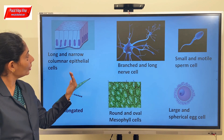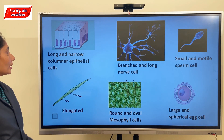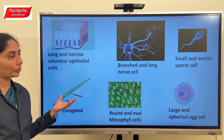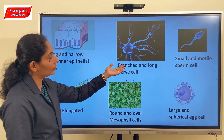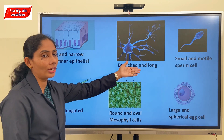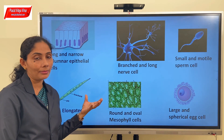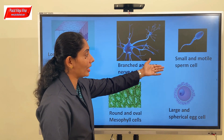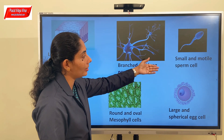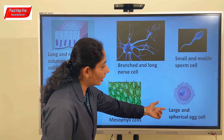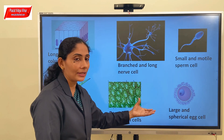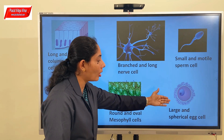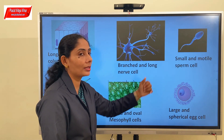On the screen there are a few more cell shapes. The long and narrow columnar epithelial cells are present in the linings of the intestines and are basically involved in absorption of nutrients. Nerve cells are branched and long - their function is to conduct impulses from different parts of the body to the brain and vice versa. Sperm cells are very small and motile. The egg cells are comparatively larger and spherical, to accommodate more nutrients - sperm cells just need to reach the ovum and cause fertilization, for which they are small and motile.